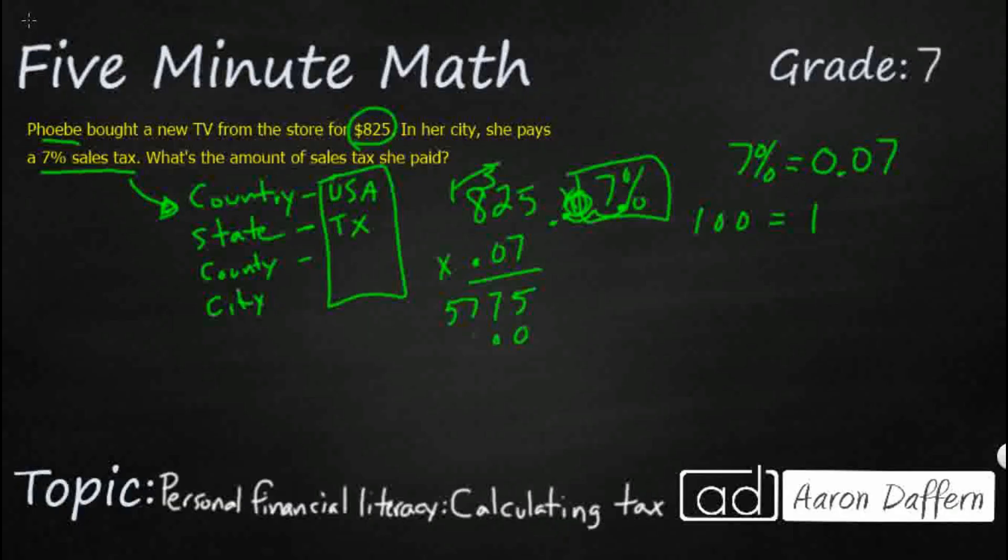I could put another row, but look, this is what's going to happen. Just a truckload of zeros. So we don't really need that. So we need 57.75. And we need to remember that we've got one, two digits behind the decimal in our factors. So we need one, two digits behind the decimal in our product. So the sales tax, pretty hefty, $57.75 on an $825 TV at 7%.